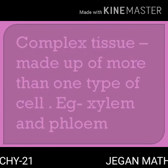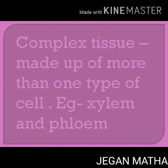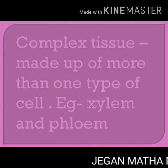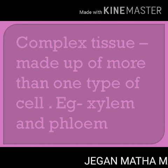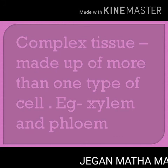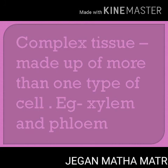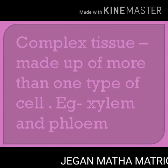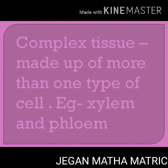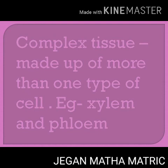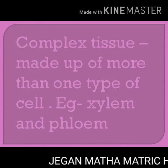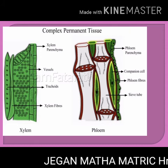Complex tissues are made of more than one type of cells that work together as a unit. Complex tissue consists of parenchyma and sclerenchyma cells. The common examples are xylem and phloem.